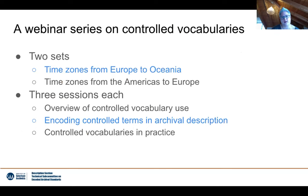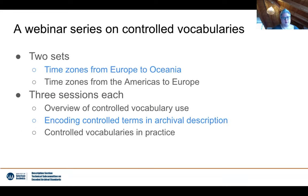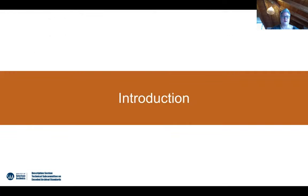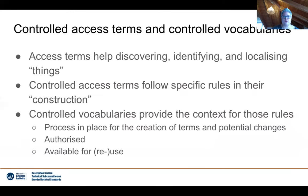We are running two sets for different time zones — currently in the set for Europe and Oceania, with a separate set for the Americas also running today. There are three sessions in total. We already had one session giving an overview of controlled vocabularies in general, and today we'll be talking about encoding controlled terms in archival description. We will have a closer look at EAD, a little bit of EACCPF, and then the example use case that Gerhard will present. I'd like to kick us off with a brief introduction including some general definitions — what do we mean when we talk about controlled access terms and controlled vocabularies?